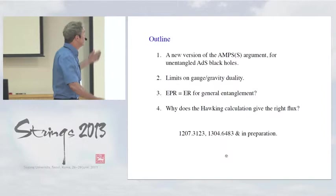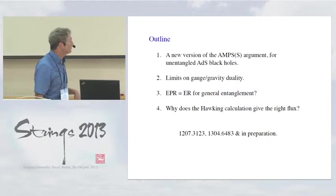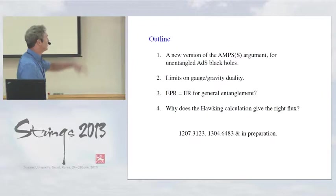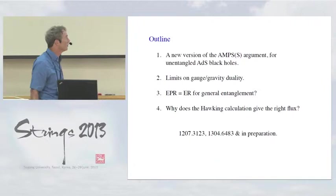So, first I'd like to give a new, and I hope simpler version of the AMPS argument, which is very good for this context. Then, second, limits on gauge-gravity duality. And those are the main items, but as time allows, I'd like to make a few comments on this new idea that Juan is going to talk about, and also on a question that comes up a lot in the firewall story number four.